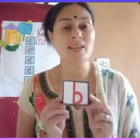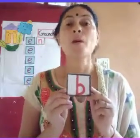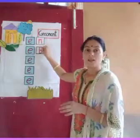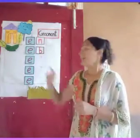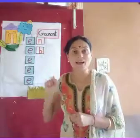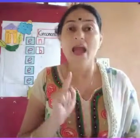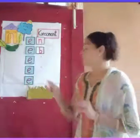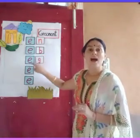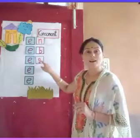Now the next consonant is B. This is B, and B says 'b'. B and vowel E join together to make the two-letter word 'eb'. Now tell me which consonant is this — this is G, and G says 'g'. G and E join together to make the two-letter word 'eg'.